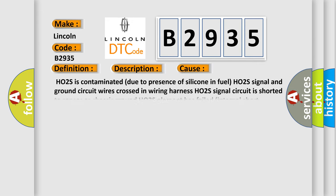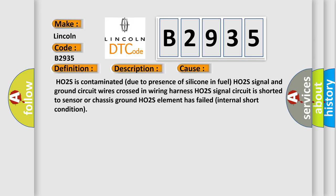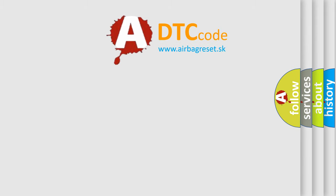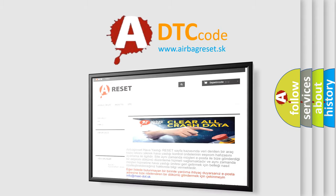This diagnostic error occurs most often in these cases: H02S is contaminated due to the presence of silicone in fuel; H02S signal and ground circuit wires are crossed in the wiring harness; H02S signal circuit is shorted to sensor or chassis ground; or the H02S element has failed due to an internal short condition.